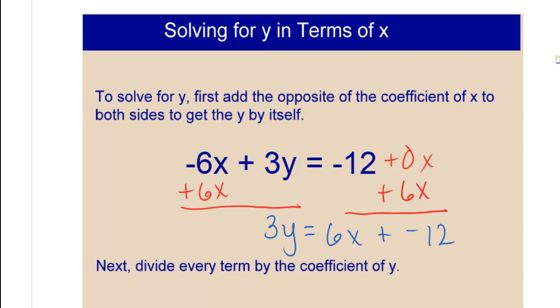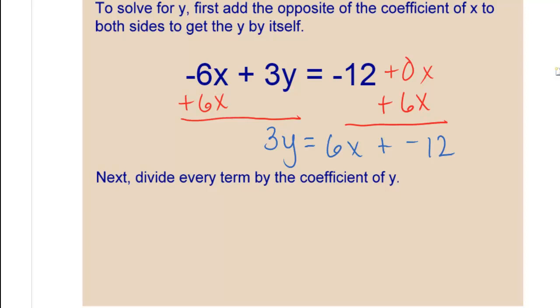The next thing I'm going to do is divide every term by the coefficient of y, just like in solving any kind of equation, right? Your last step is to multiply by the reciprocal, and to make it really simple, instead of thinking of it as multiplying by the reciprocal, we're going to go back to division because it's the same thing.